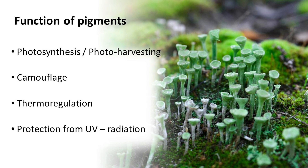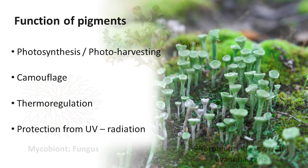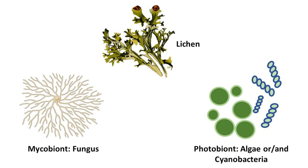Additionally, pigments may have functions beyond their photo-properties depending on the chemical composition of their molecules. Lichens are symbiotic organisms composed of a fungus and a photobiont — alga or cyanobacteria, or sometimes even two photobionts simultaneously.